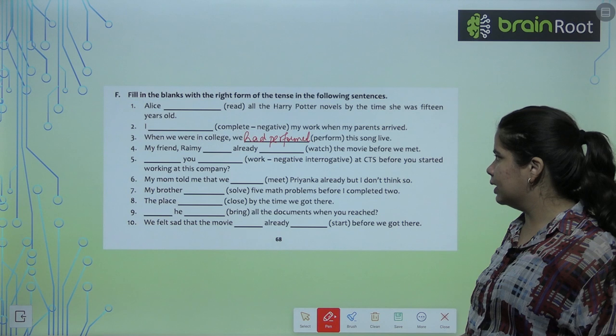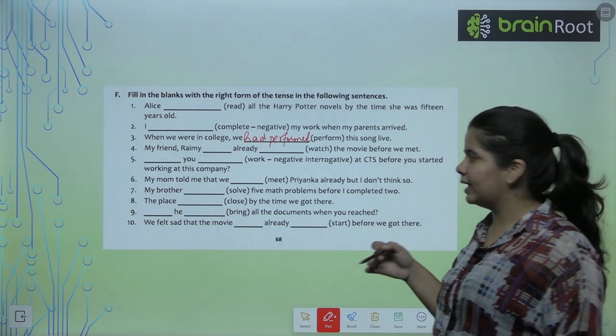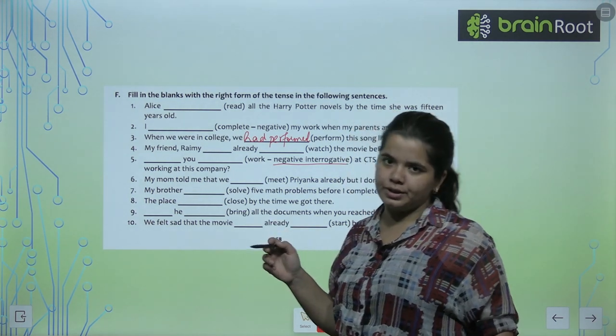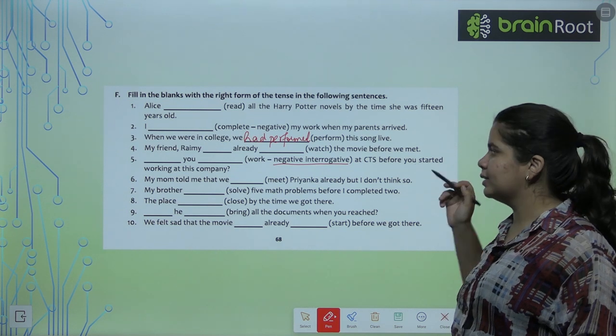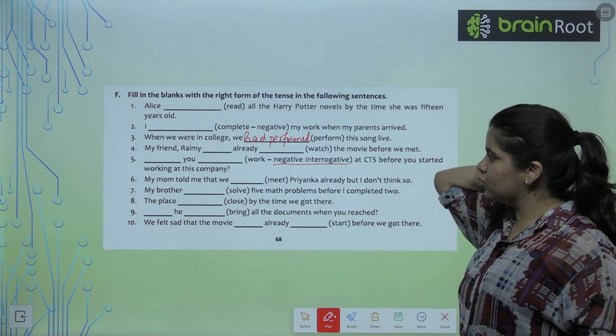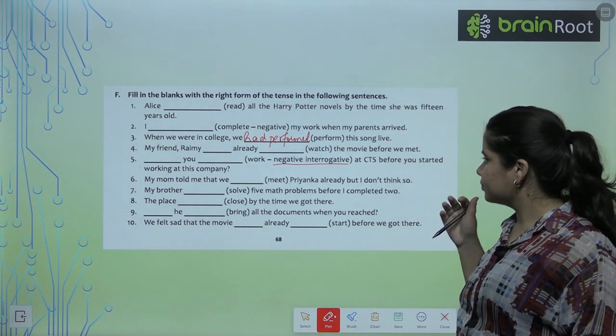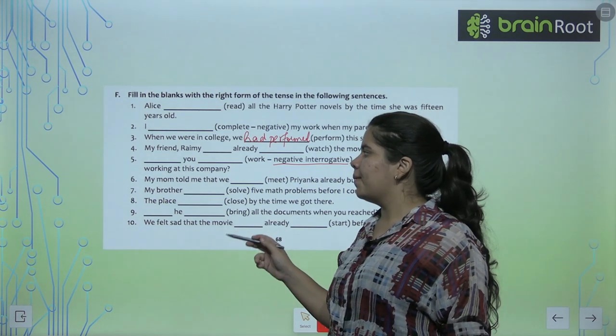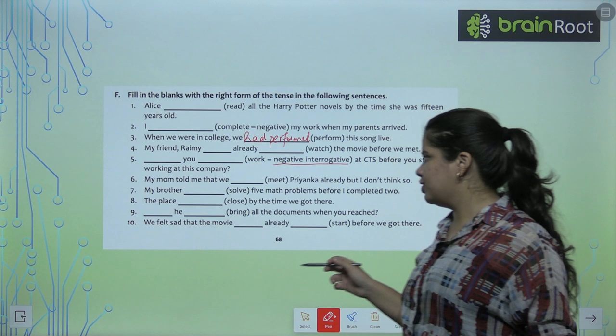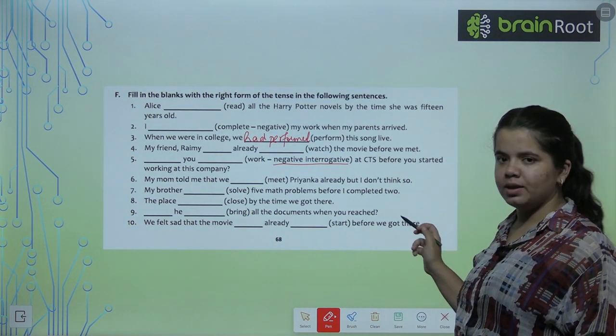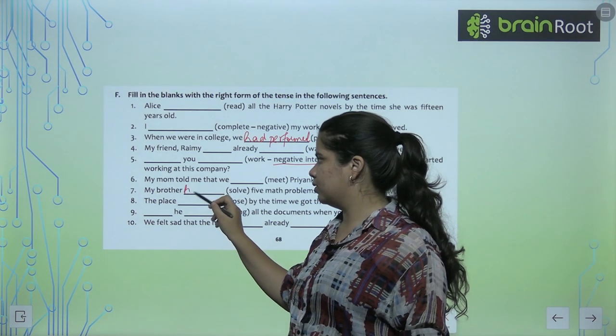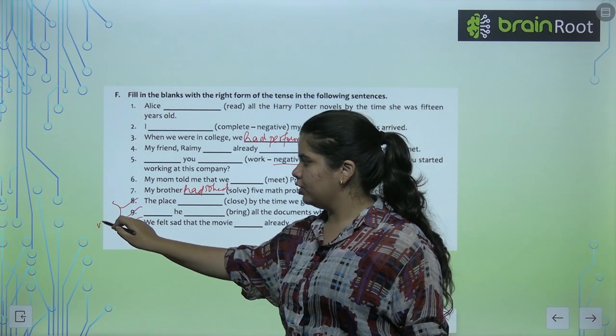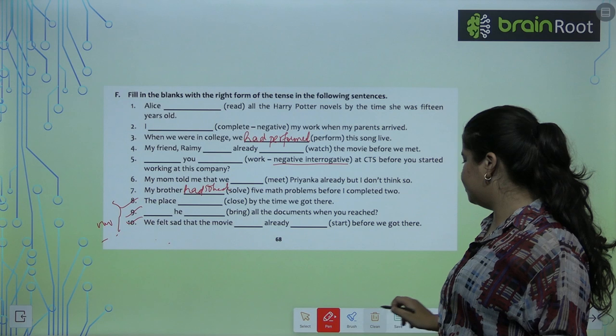Next, my friend Rema had already watched. Have you worked? Because it is negative interrogative, have you not worked at the CTS before you started working at this company. Next, my mom told me that we had met Priyanka but I don't think so. Good. Next, my brother dash five math problems before I completed two. My brother had solved. The last three you have to try yourself as your homework.